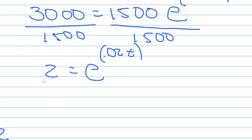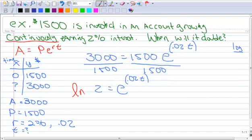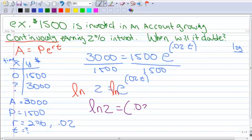Now I want to take the log of both sides. I like to use natural log, because that makes something disappear. So I have the natural log of 2 equals. Now remember that whole exponent can come down. So I have 0.02T times the ln of E. The ln of E is 1, so that disappears.